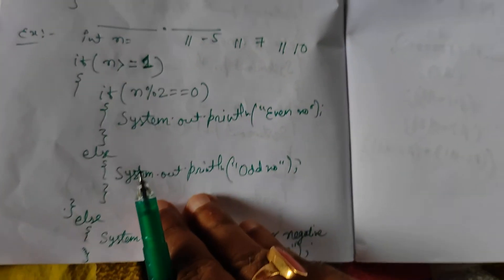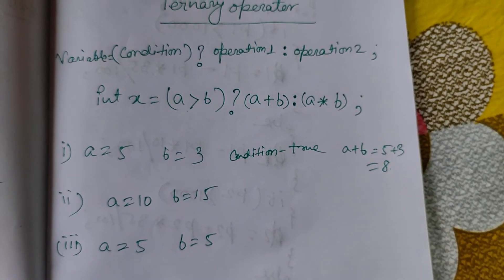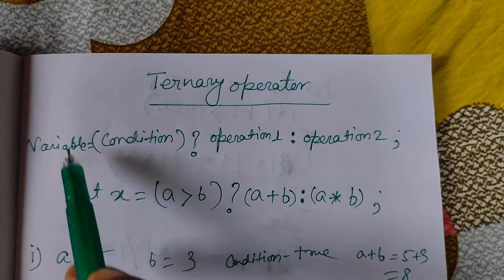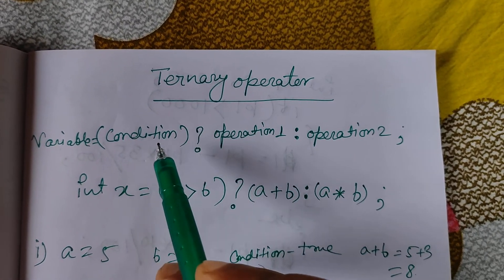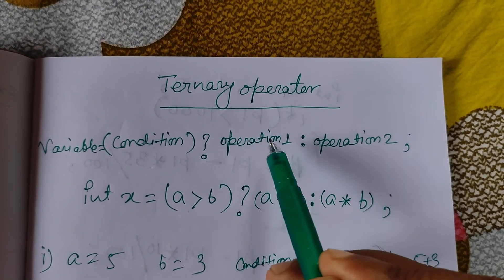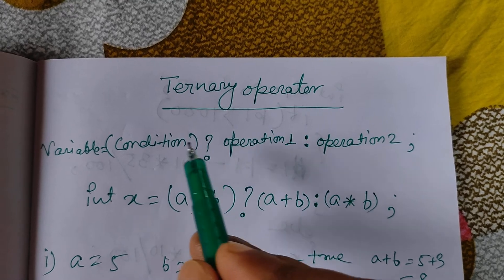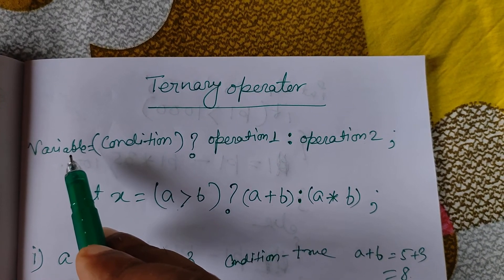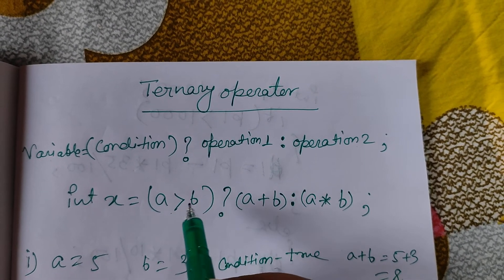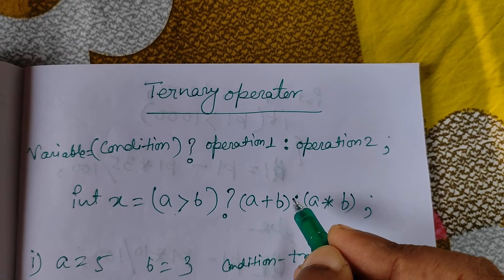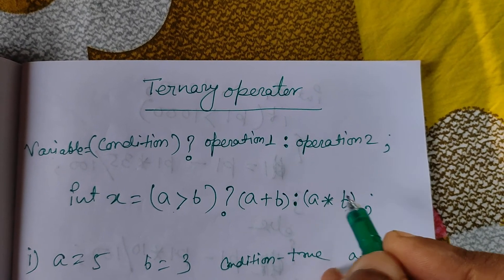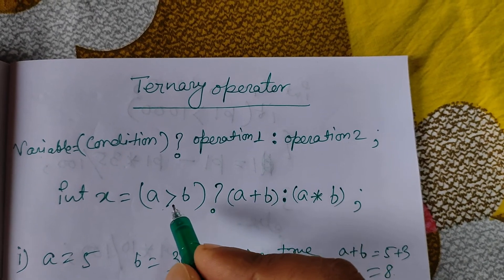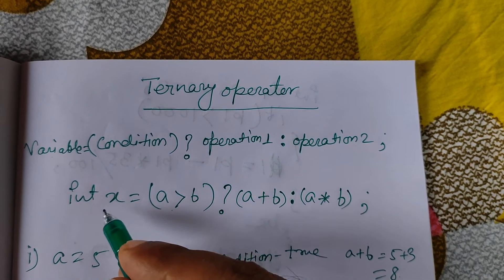Next topic is ternary operator. We assign a variable a value based on a condition. The syntax is: variable = condition ? operation1 : operation2. If the condition is true, operation 1 executes and stores in the variable. If false, operation 2 executes. Example: int x = (a > b) ? a + b : a * b. If a = 5 and b = 3, then a > b is true, so x = a + b = 8.